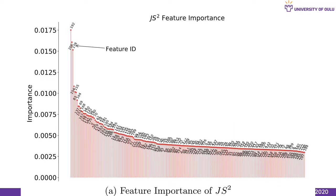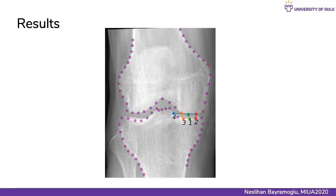In addition to classifier performance, we investigated the feature importance of the proposed descriptor. This figure illustrates how much each feature contributes to the model's overall predictive performance. Most of the features are equally informative and therefore cannot be ignored. This figure also demonstrates the four most important elements of our descriptor. Interestingly, the fourth one might be related to knee alignment.